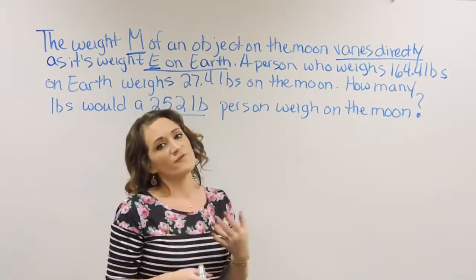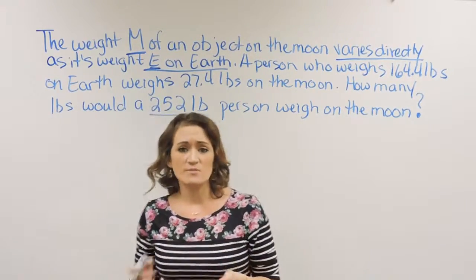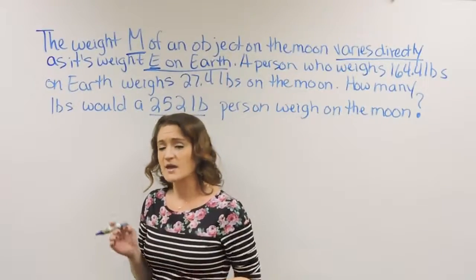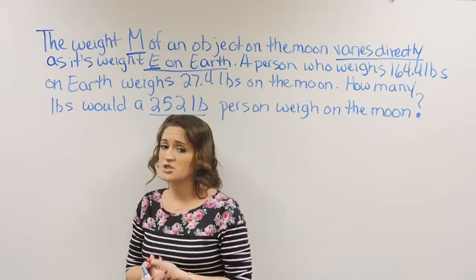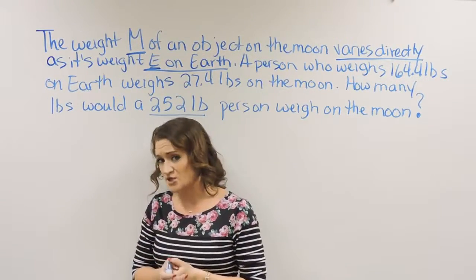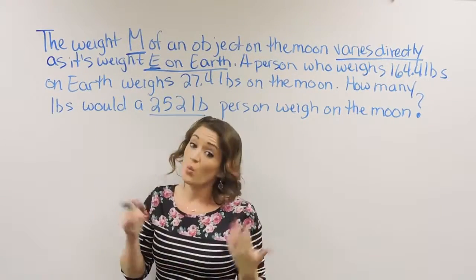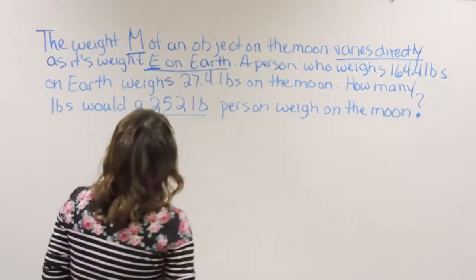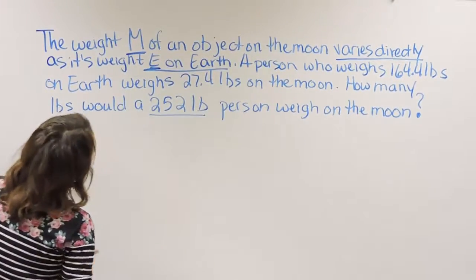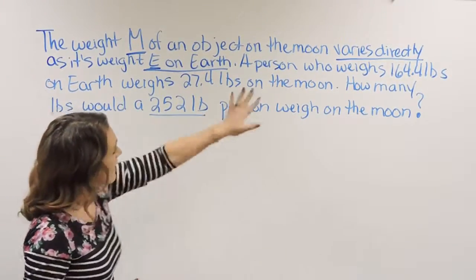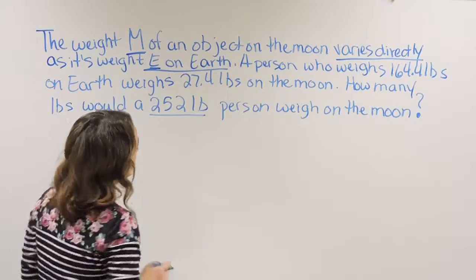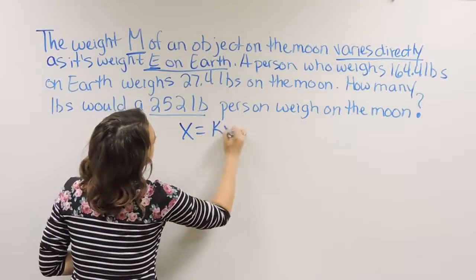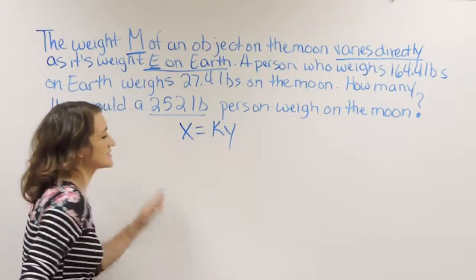There are a few different forms of equations when it comes to variation, and the kind of variation you have is going to tell you what formula you need to use. For this particular problem, we're talking about direct variation, which normally looks something like this: X is equal to KY.